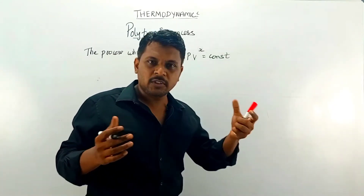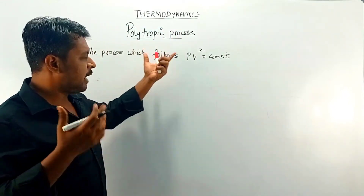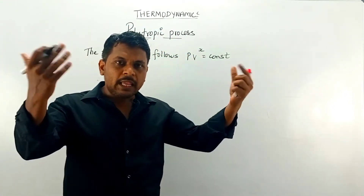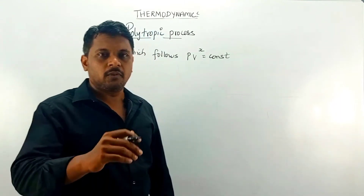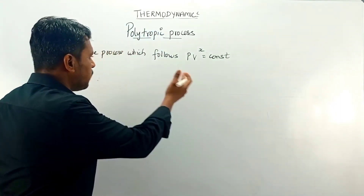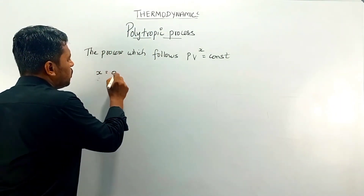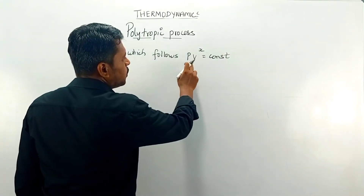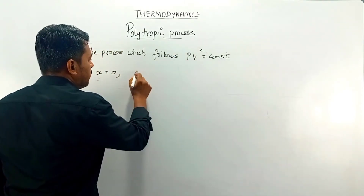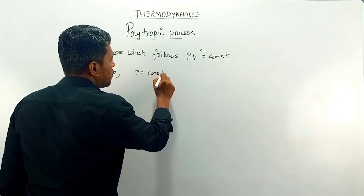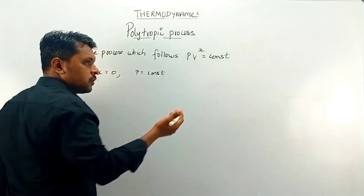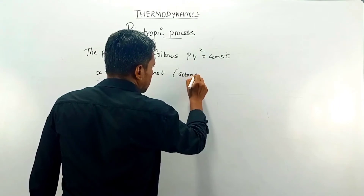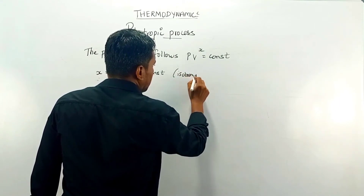The equation depends on pressure and volume. The process which follows PV^x = constant, where x is also a constant, is called a polytropic process. Based on the value of x we can define real-life situations. For example, when x = 0, this term becomes 1, meaning P = constant, so this process is an isobaric process.